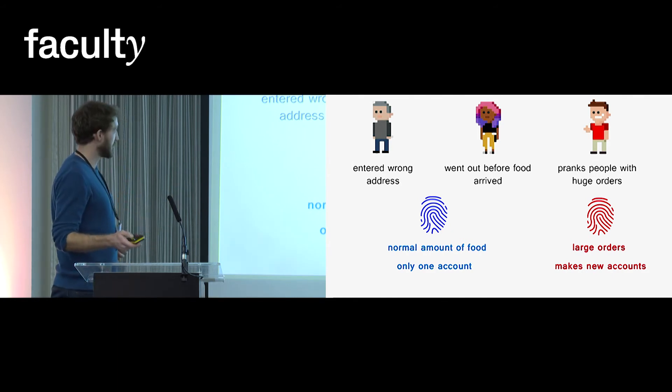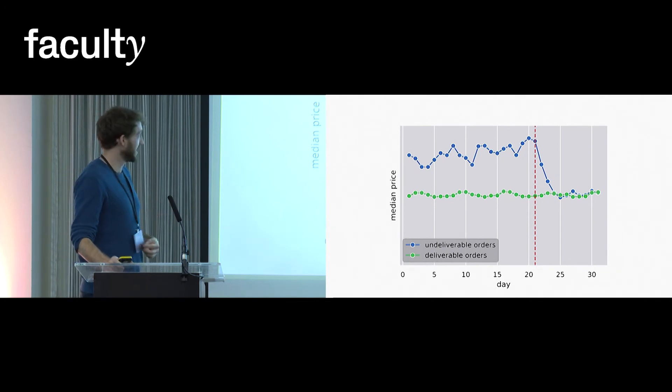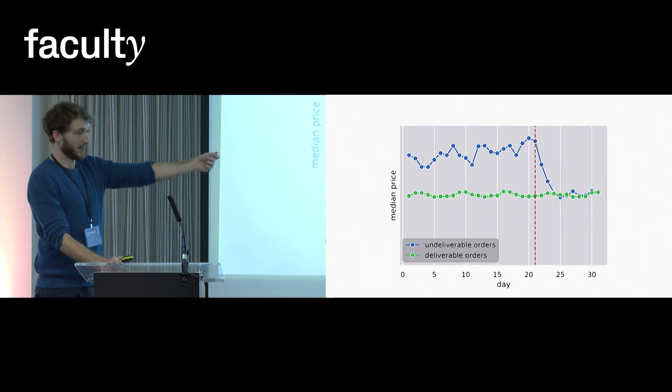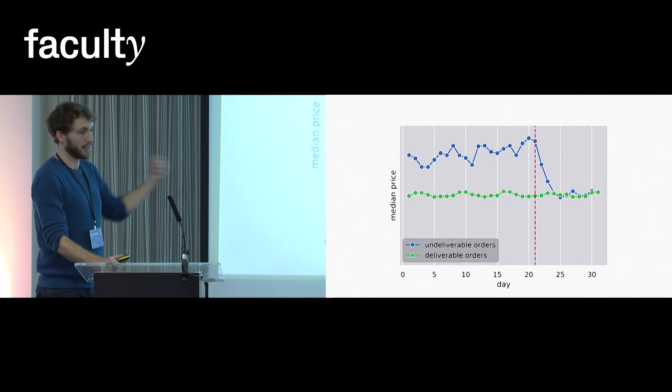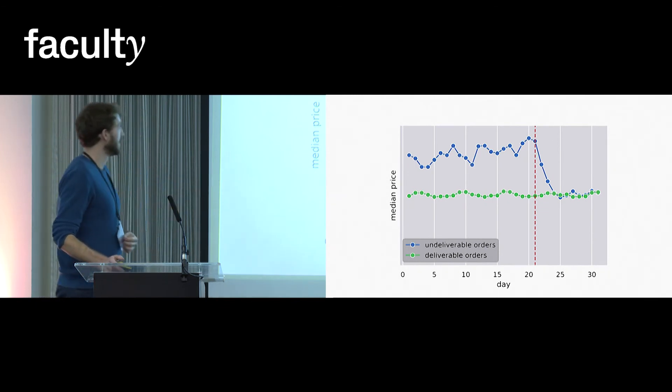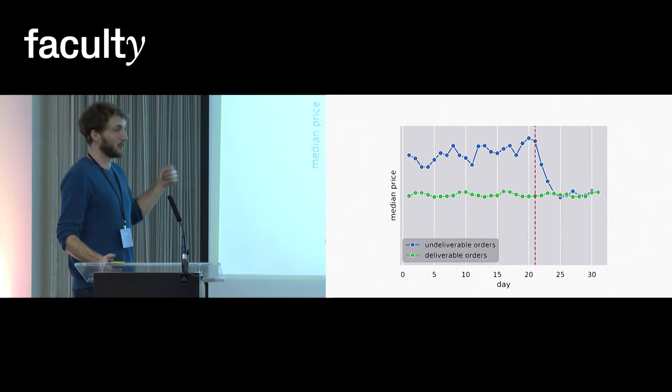So I'm now going to show you another graph that I think is quite interesting. This graph shows the average price of the undeliverable orders in blue, across the entire month of data. And our normal orders are in green. So the orders that got delivered, this is their average price across the month. What's really interesting is that for the undeliverable orders at the start of the month, the price is almost double what the normal orders are.